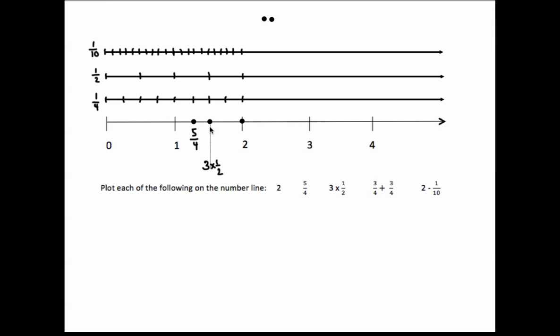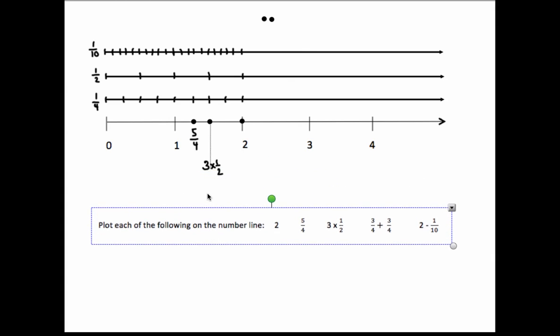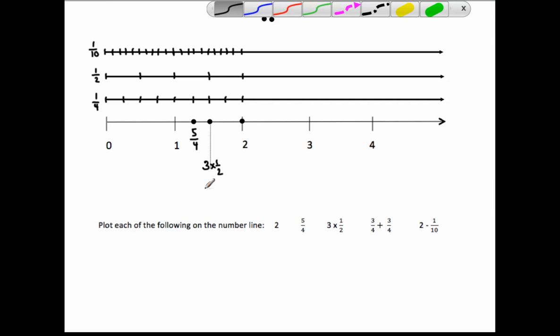As we can see, 6 fourths is also at the same point on the number line as 3 halves, which is 3 times 1 half. So let me just move this down a bit, and this is also the same point on the number line. So we can say that 3 times 1 half and 3 plus 3 fourths are equivalent because they are the same point on the number line. Also, they have the same size as well.